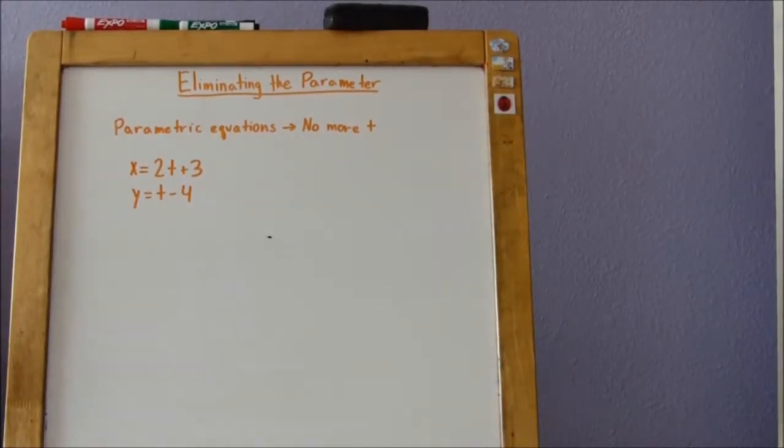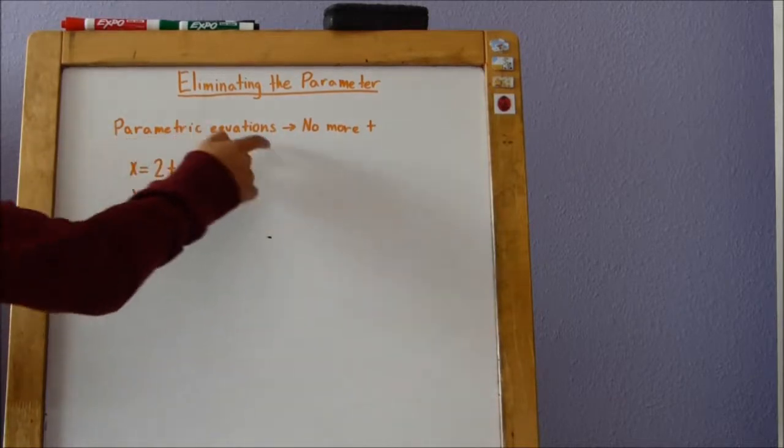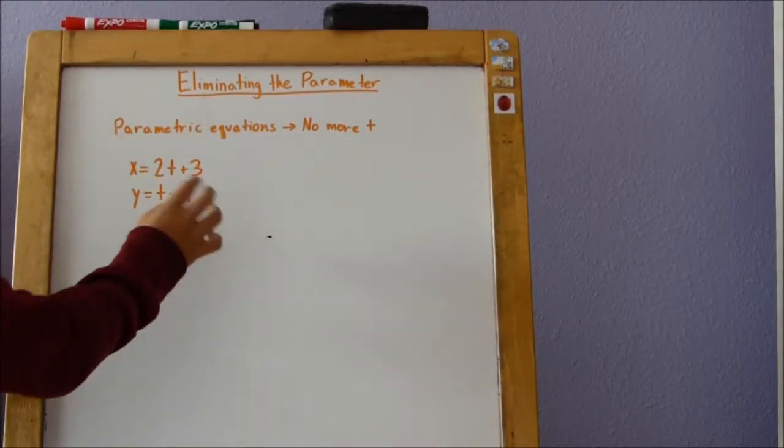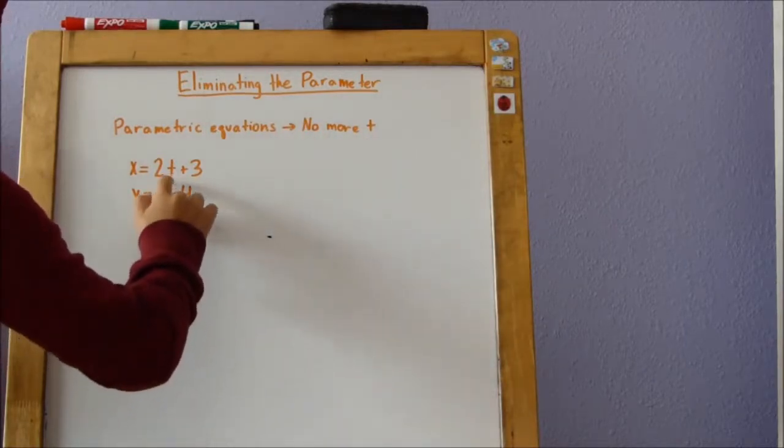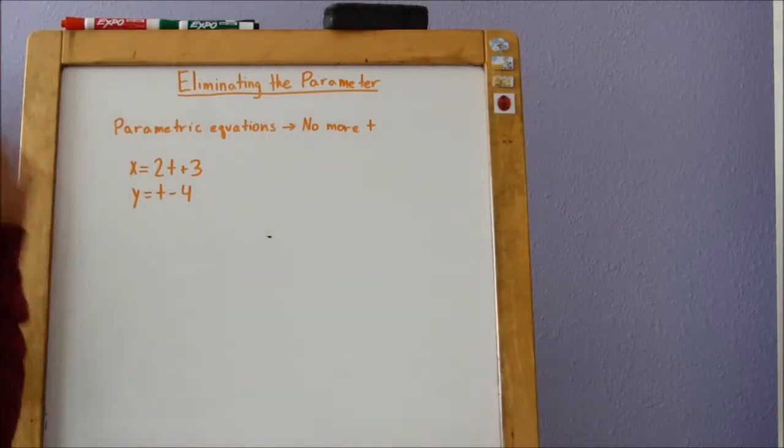Today we're going to be talking about eliminating the parameter, which is where you take a parametric equation, such as this one, and you turn it into an equation where there is no longer a t. So it's going to be a y equals equation.